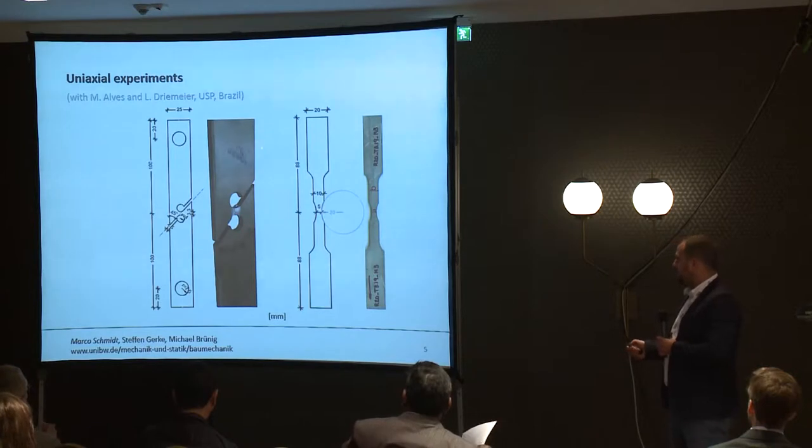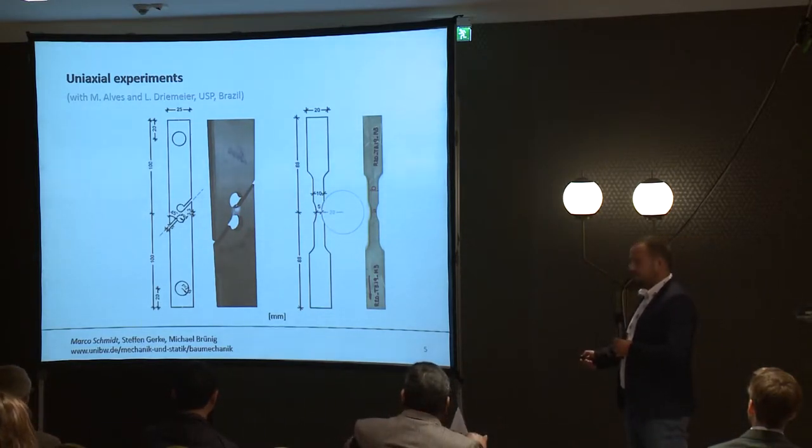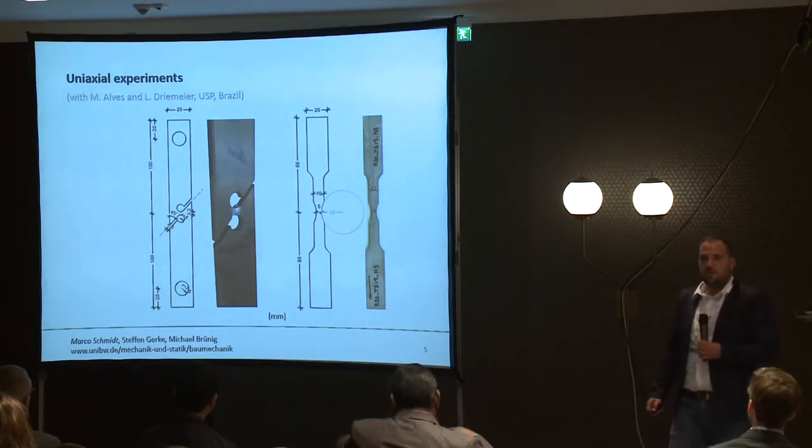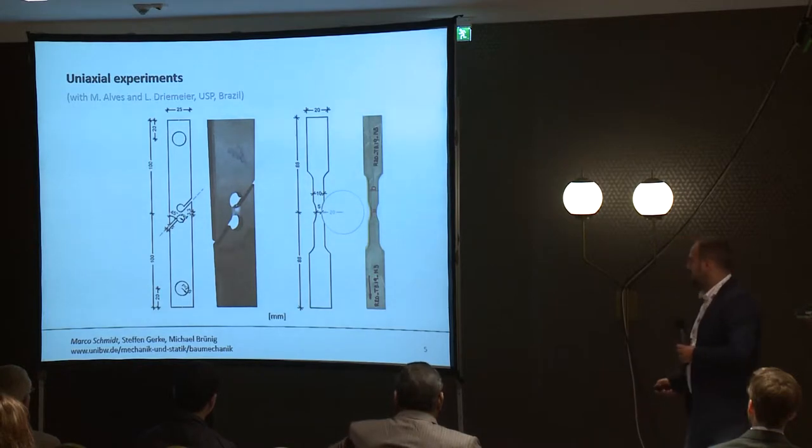On the left side, you can see a tensile bar which has a central part with notches in two directions. Because of the geometry, the specimen has a shear load in the center and is different from the general tensile bar.